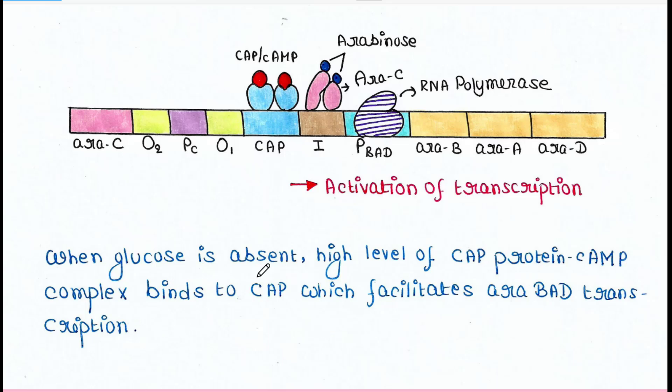When glucose is absent, ATP is easily converted into cAMP, and the cAMP-CAP complex binds to the CAP site, facilitating Ara BAD transcription. In this way, the Arabinose operon works. I hope you liked the lecture. Thank you for watching.